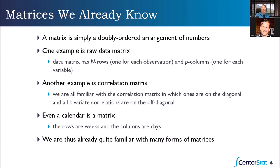We already know matrices. We're going to refer to a matrix as a doubly ordered arrangement of numbers. 'Doubly ordered' just means we have two categories — rows and columns. Every one of us, whether we know it or not, has worked with raw data matrices, whether in an Excel spreadsheet or tabular data in a class. A data matrix typically has n rows, where that's your sample size, and p columns, where p is the number of variables.